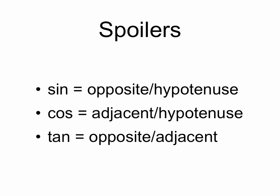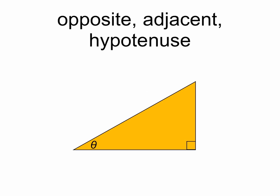So let's see what we mean by that. First, we're going to define opposite, adjacent, and hypotenuse. If we have a right triangle and we label one of the angles theta, then opposite is the side that is farthest from that angle. Adjacent is the remaining leg of the right triangle, and hypotenuse is the longest side of the right triangle.